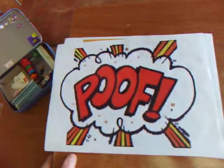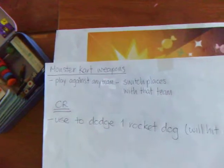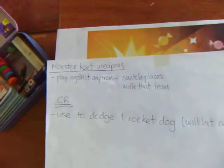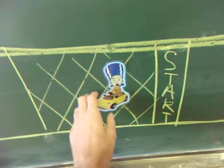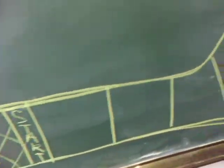Another possible weapon card they could get is Poof. You can play this against any team and switch places with that team. So for example, this team which went back to the start, if they get a Poof card, they can play it and they can switch places with this team.